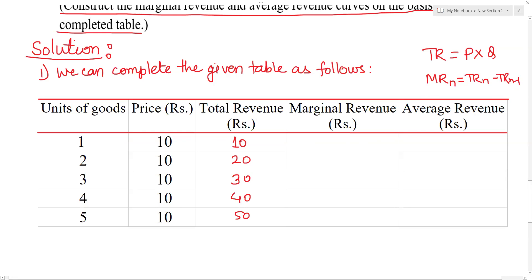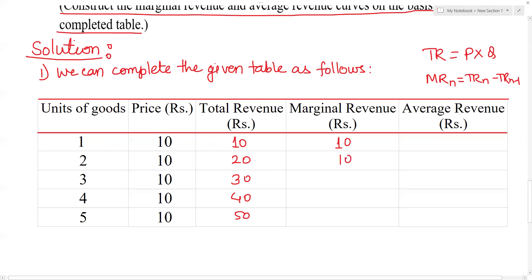Change in total revenue: when Q is 1, total revenue is 10; when Q is 0, total revenue is 0. So marginal revenue is 10 minus 0, which is 10. Then 20 minus 10 is 10, 30 minus 20 is 10, 40 minus 30 is 10, 50 minus 40 is 10. So marginal revenue is 10 throughout.